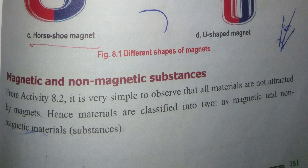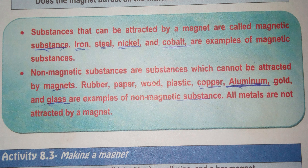It is very simple to observe that all materials are not attracted by magnets. Materials are classified into two types: magnetic materials and non-magnetic materials. Substances that can be attracted by a magnet are called magnetic substances. Examples include iron, steel, nickel, and cobalt.